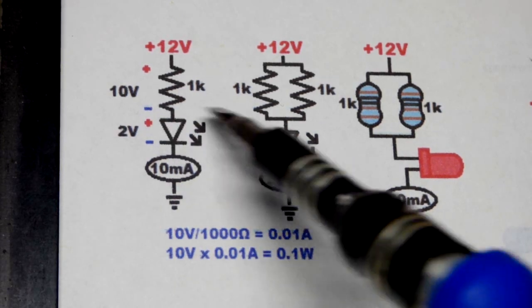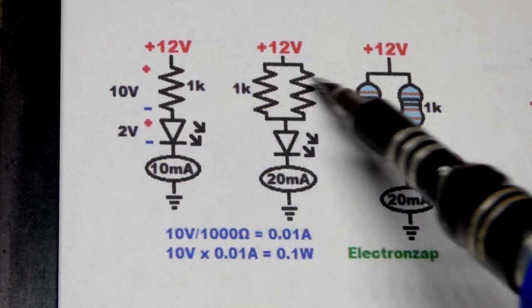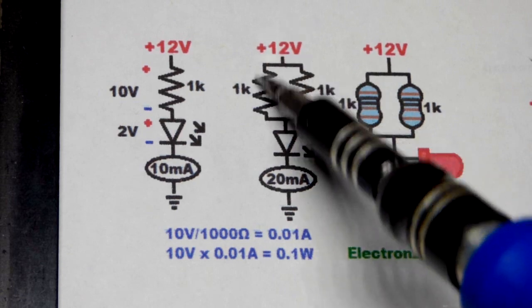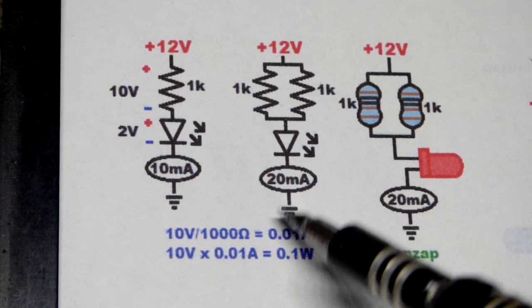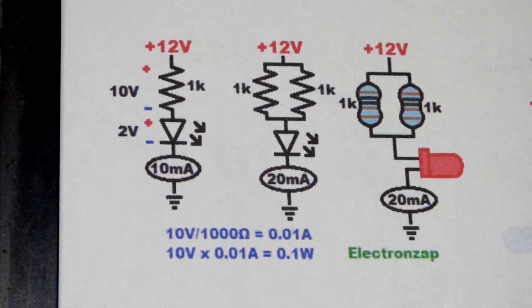Because the red LED is still dropping two volts, but that 10 volts now is across both of these resistors. They're both passing current and then where they combine, that current combines and you get 20 milliamps of current.